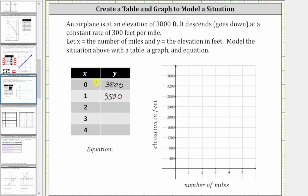When x is two, y is equal to 3,500 minus 300, which is 3,200. When x is three, y is equal to 3,200 minus 300, or 2,900. And when x is four, y is equal to 2,900 minus 300, which is 2,600.